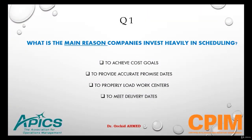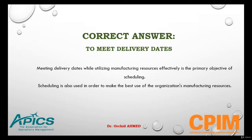Question number one: What is the main reason companies invest heavily in scheduling? Options are: to achieve cost goals, to provide accurate promise dates, to properly load work centers, or to meet delivery dates. The main reason a company invests in scheduling will be to meet delivery dates.